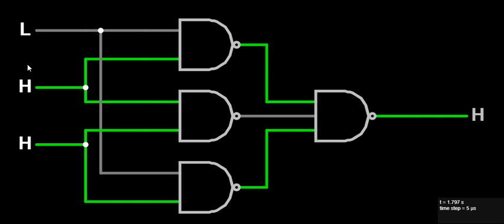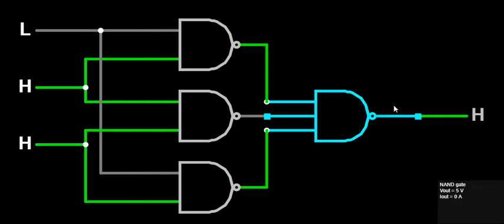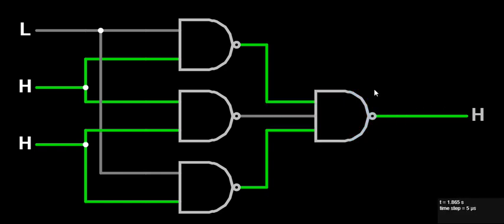This is the function of majority logic. Now if we take four-bit input, how will the output change? In four inputs we consider the majority. Suppose we have X, Y, and Z inputs. There will be one equation at the output: output = XY + YZ + ZX. As per this equation, the output will change.